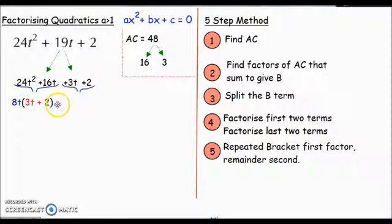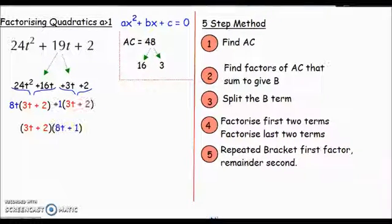Now when it comes to factorizing the second two, remember you've always got your eye on a repeated bracket. You need to get 3t + 2. Well, I've already got 3t + 2, so what should I factor out of this? The answer is we need to factor out a 1, a positive 1. So we've got our +1 outside and our repeated bracket 3t + 2: +1(3t + 2).